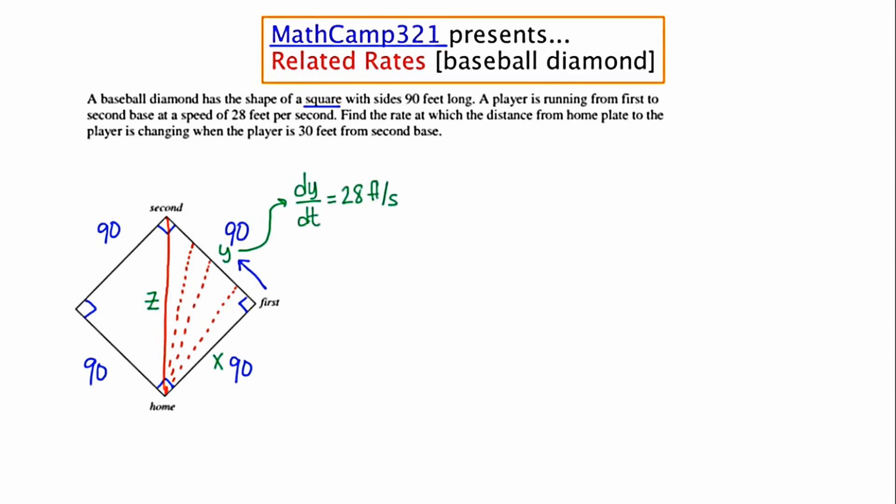Now the specific thing that we're supposed to find is dz/dt at the moment that the runner is 30 feet from second base. Now this final sentence gives us a little bit of a problem. When the player is 30 feet from second base well the distance from first base to second base is 90 and we're trying to figure out the precise moment when the runner is 30 feet from second base. So I'm denoting that with this brown color here. This is 30.